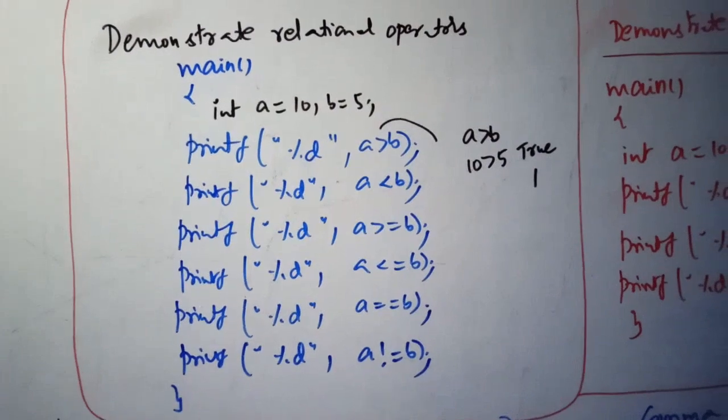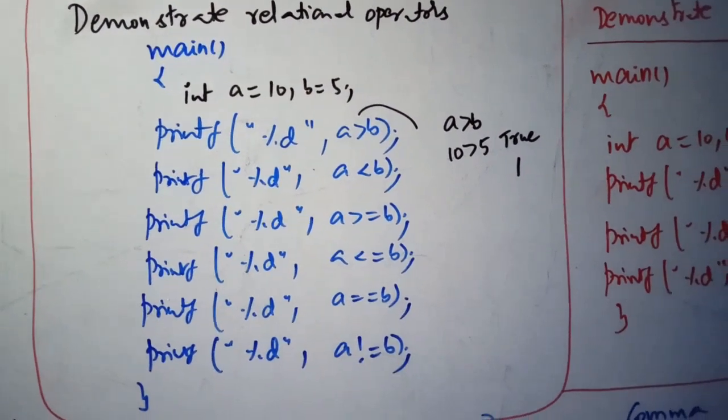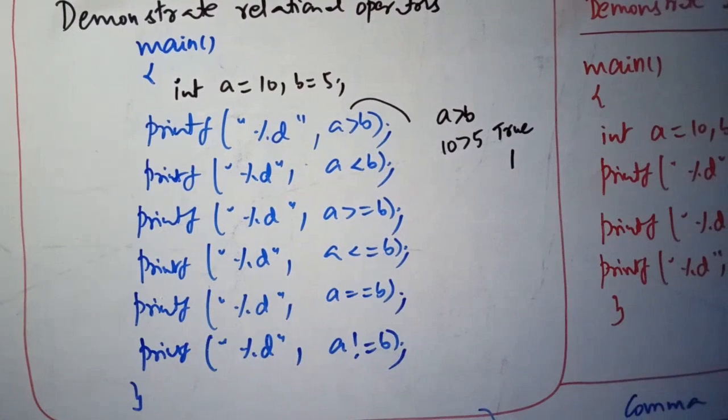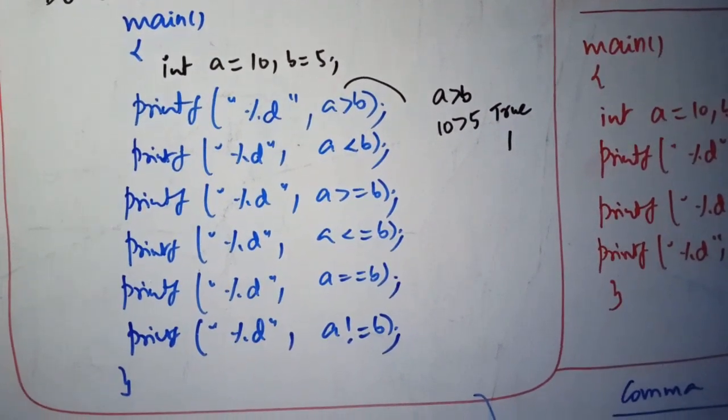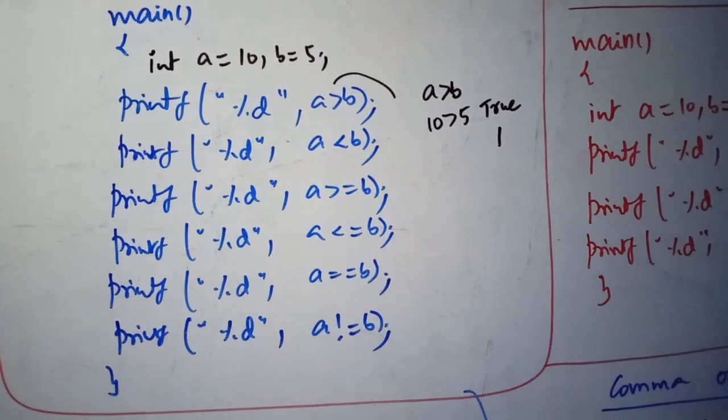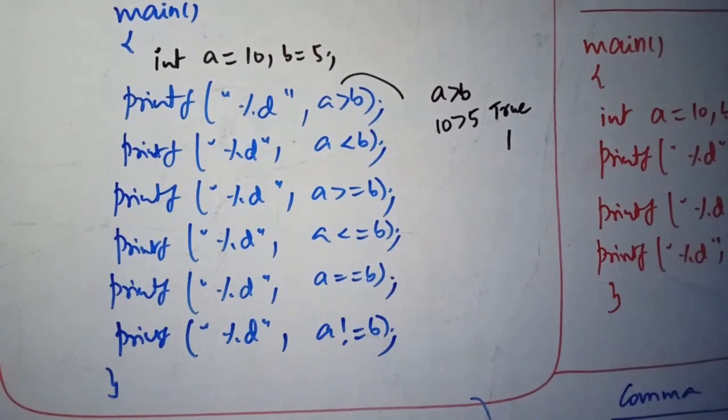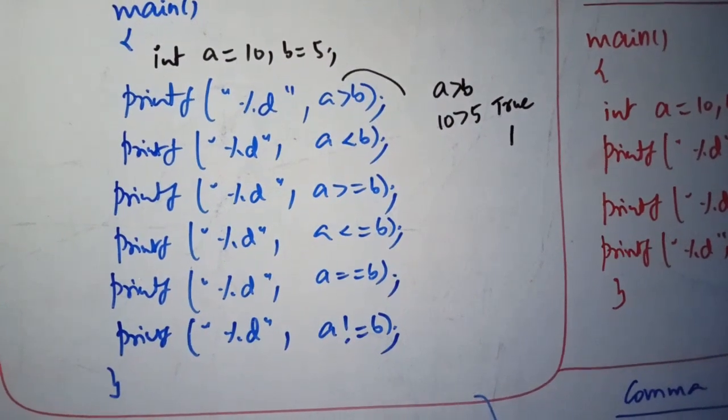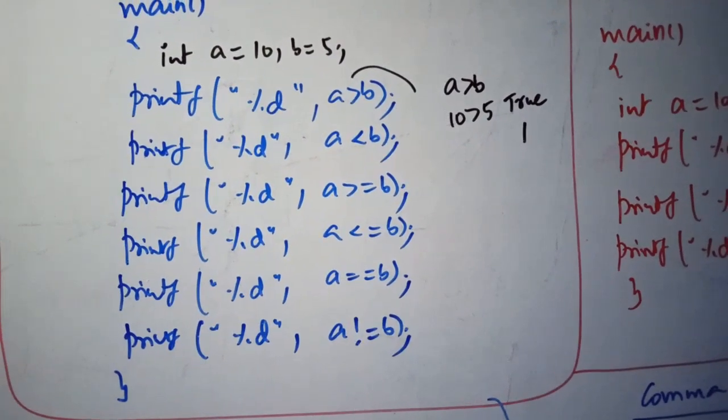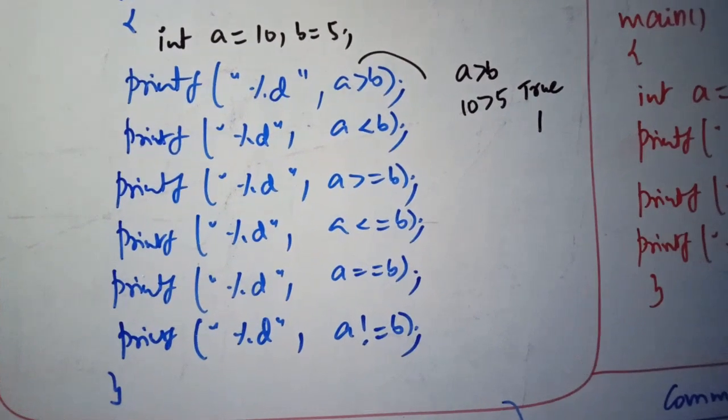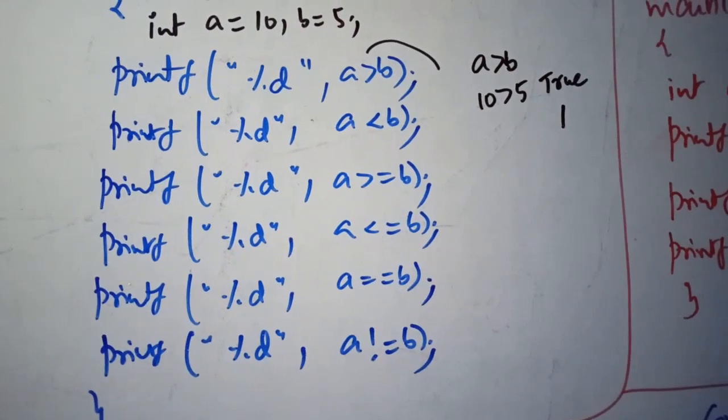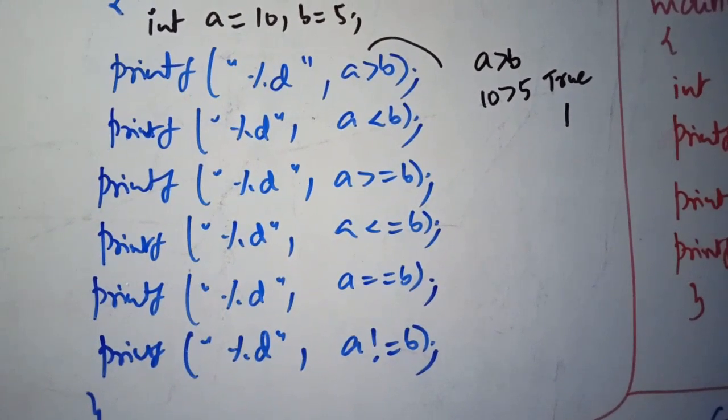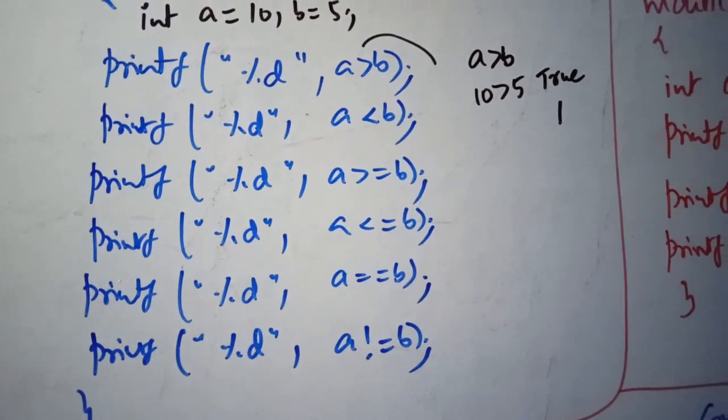Look at demonstration of a Relational Operators program. Here we use two variables a and b. a is 10 and b is 5 and look at all the print-off statements clearly. In each and every print-off statement we are given a simple condition a greater than b and all. A condition can be directly used in print-off statements like this. So a greater than b, that is I mean here 10 greater than 5 is true, true is nothing but one.